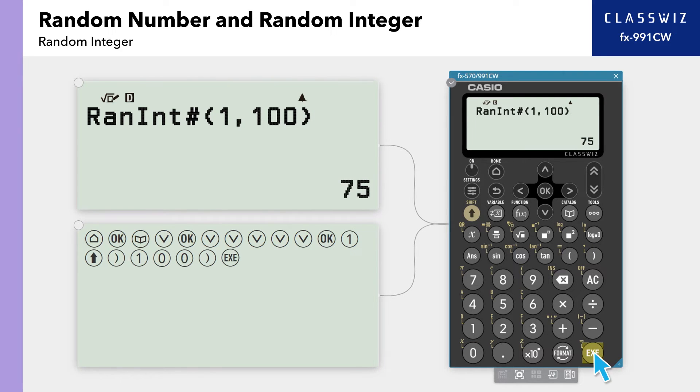Press Execute to display the random number. As you can see, a new random integer between 1 and 100 is generated each time Execute is pressed.